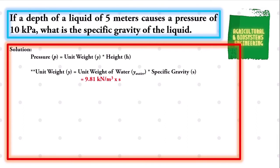We will substitute this to our first equation. We have pressure is equal to 9.81 kilonewtons per cubic meter times the specific gravity multiplied to the height of 5 meters.